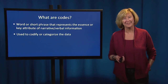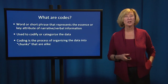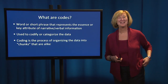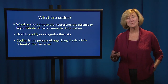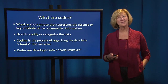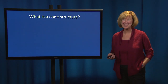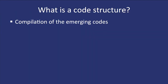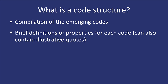These codes are used to codify or categorize the data. Coding — the act of coding — is the process of organizing the data into chunks that are alike: chunks or segments of the data that are similar in important ways. Codes are then developed into a code structure. A code structure is a compilation of the emerging codes developed during that process of individual and group review and interpretation. The code structure includes brief definitions or properties for each code, and can also contain illustrative quotes or excerpts from the transcripts that demonstrate a particular property or definition.